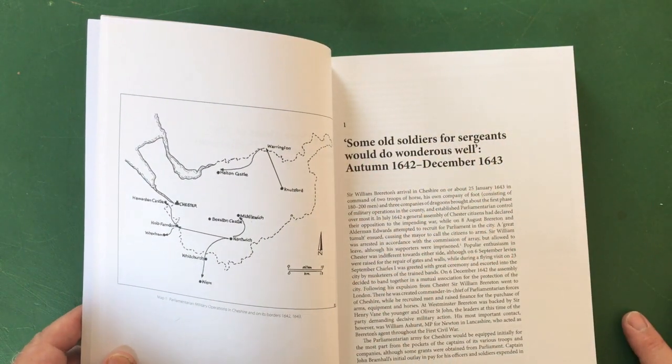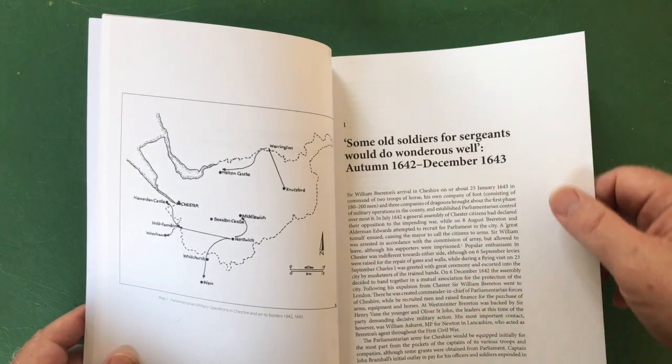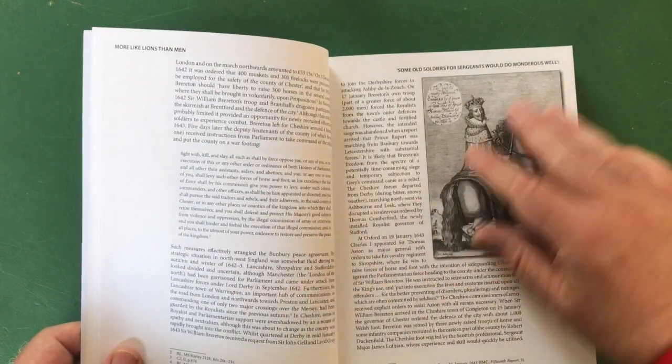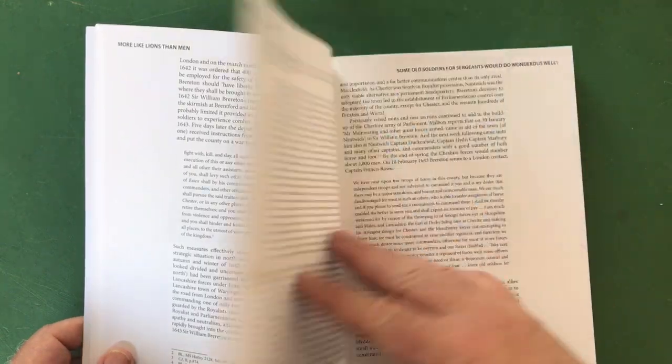Very clearly marked - there's Chester by the estuary, Whitchurch, Knutsford, Warrington, Middlewich, Nantwich. These are places whose names crop up time and time again. Lovely quotations at the start as well: 'some old soldiers or sergeants would do wondrous well.'